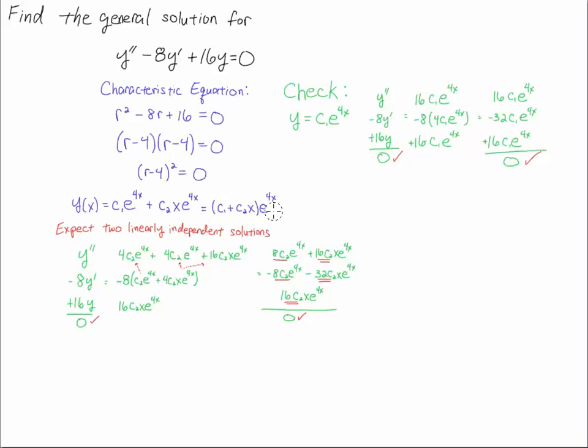And I can factor out the e to the 4x, and I get this linear term, c1 plus c2x times the exponential term. And that is the solution to this ODE. In the second part to this video, I explain mathematically why this x e to the 4x term shows up, and you get this linear term times the exponential. Good luck.